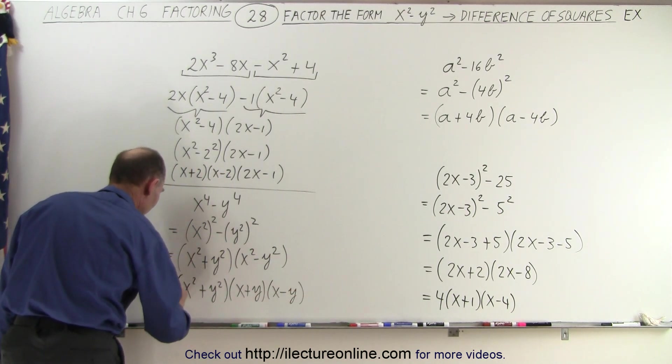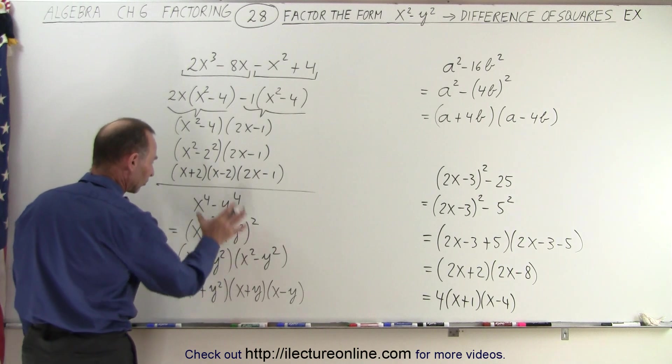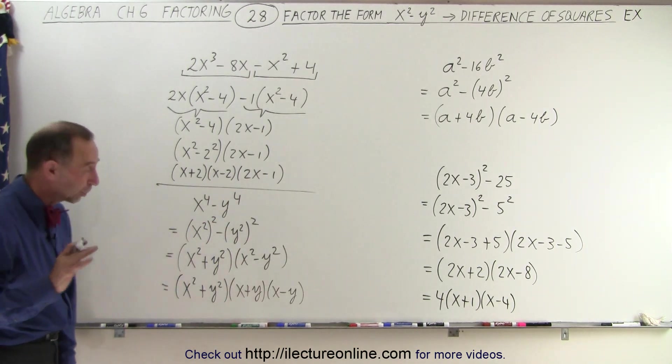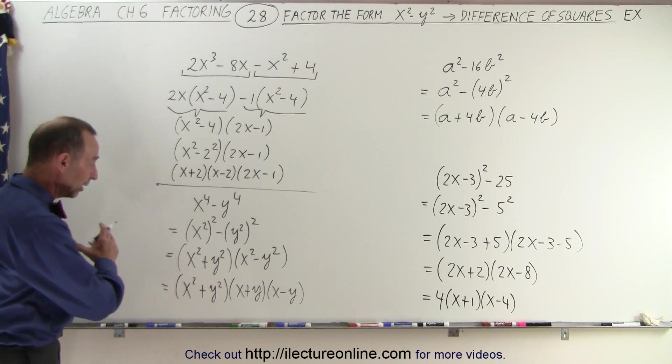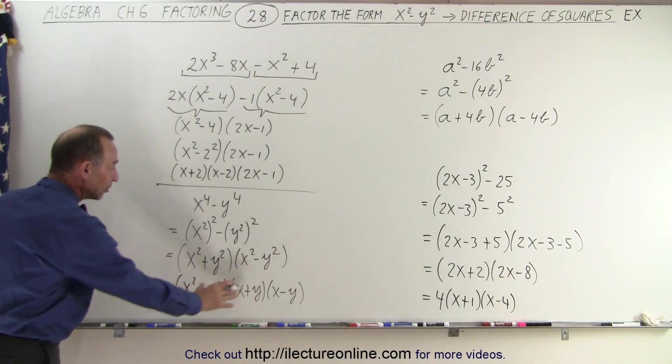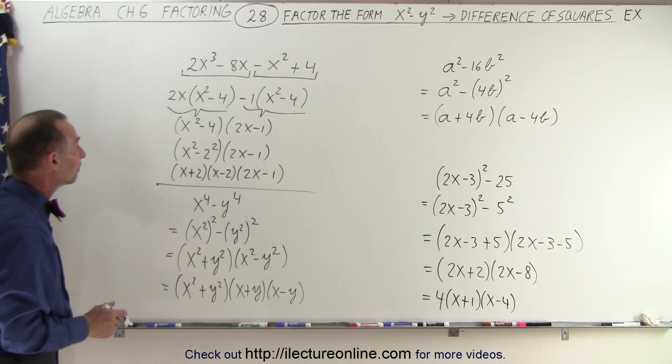So this is x² plus y² times x plus y times x minus y. And so if you put a few equal signs there, then you can see that's the final factored form of this. So even though it didn't look like it was the difference of squares, you can manipulate it first in that form, do your magic, and then again you realize that one of the portions of it can be factored again.